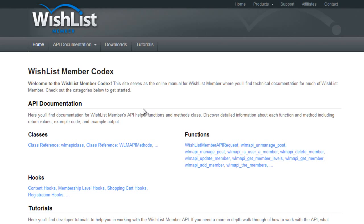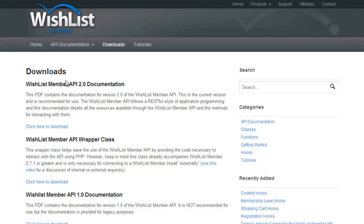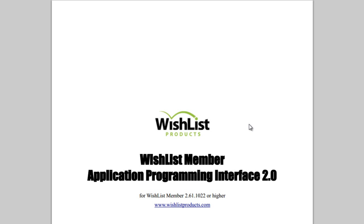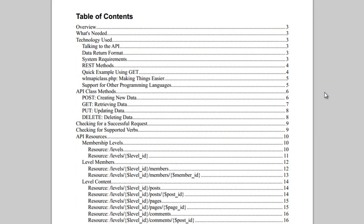The first thing that's important to talk about — here we are on the codex. I'll head to the downloads page and what we're looking at is the WishList Member API 2 documentation. If we click to download, this is actually a PDF, and what this is is a document that lays out the raw interface of the API. This is the most basic method of interacting with the API, and as you might imagine, it's a REST API.